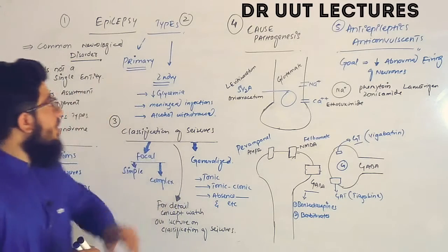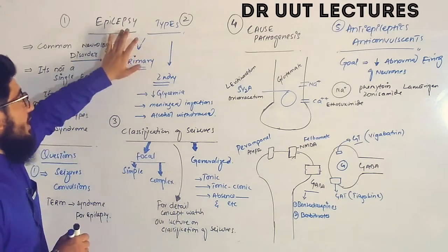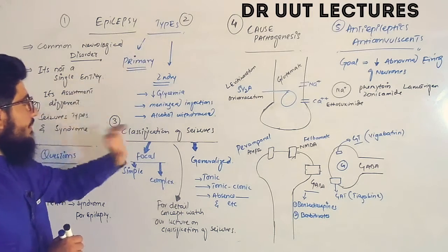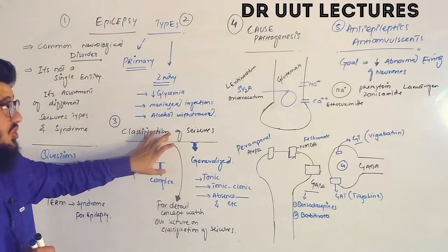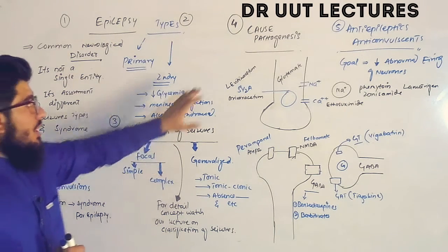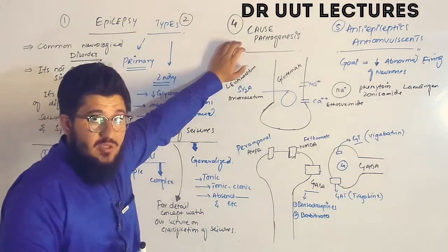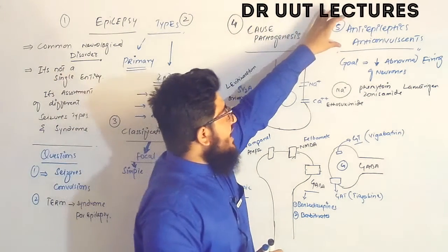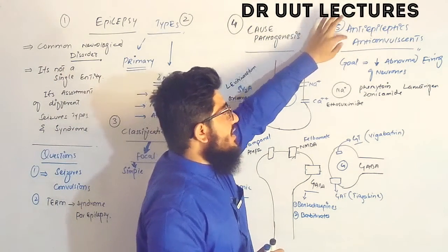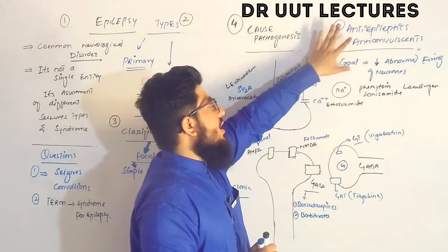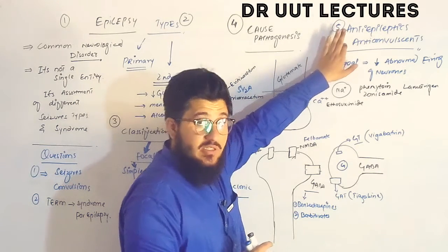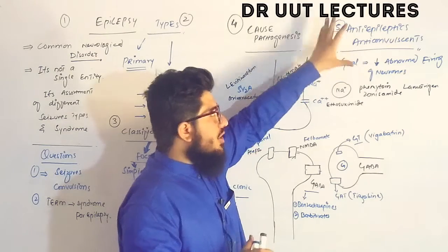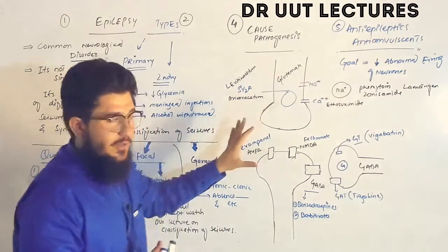In today's tutorial we will talk about epilepsy: the types of epilepsy, the classification of seizures, the cause or pathogenesis of epilepsy, and the anti-epileptics, anti-convulsants, or anti-seizure drugs — in short, the drugs to treat epilepsy.